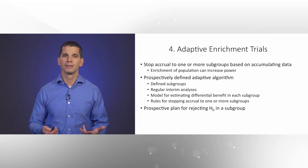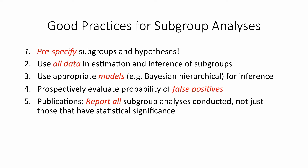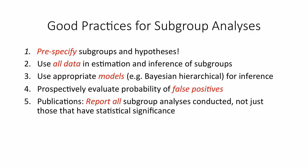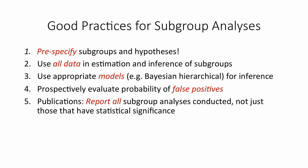Most importantly, we need a prospective plan for rejecting the null hypothesis in a given subgroup. In summary, good practices for subgroup analyses include: first, pre-specify all subgroups and hypotheses prior to running the trial to make your intentions transparent. Second, use all data in estimation and inference of subgroups to avoid the issues of splicing and dicing data into smaller subsets. Third, use appropriate models — in particular the Bayesian hierarchical model — to reduce bias and the probability of false positives. Fourth, prospectively evaluate the probability of obtaining false positives so adjustments and calibrations can be made to the design and analysis.